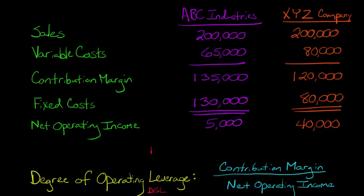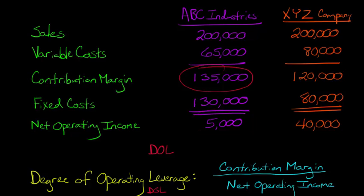So the DOL for ABC Industries would be $135,000 divided by $5,000. If you do the math there, that's going to be 27.